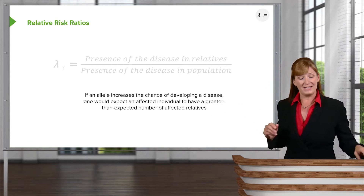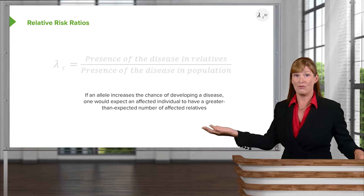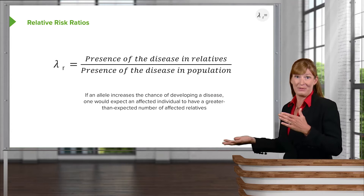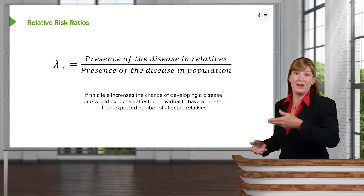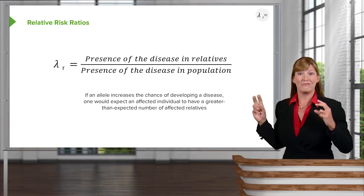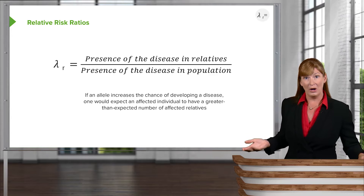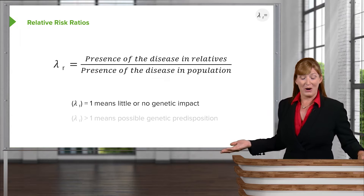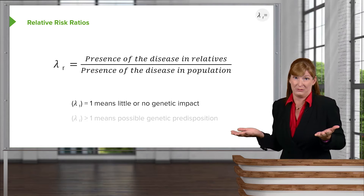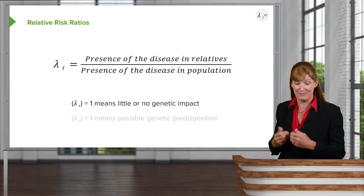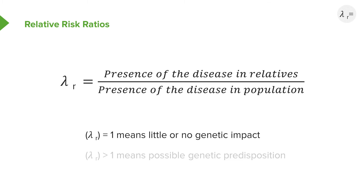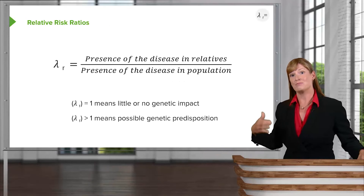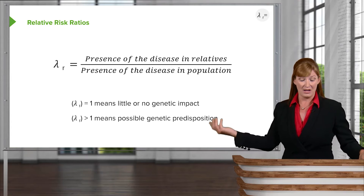The more that a condition exists in relatives — if it exists more in relatives than in the general population — then we would have a number greater than one. We call this measure the relative risk ratio, lambda sub r. When lambda sub r equals one, we have little or no genetic impact, meaning the condition is probably not genetic. If it's greater than one, there's a possible genetic predisposition.